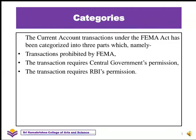Categories: The current account transactions under the FEMA Act have been categorized into three parts, namely: transactions prohibited by FEMA, transactions that require Central Government permission, and transactions that require RBI's permission.